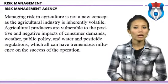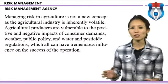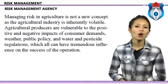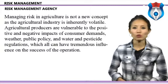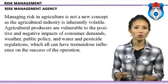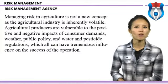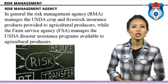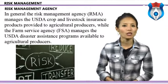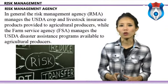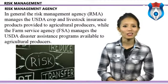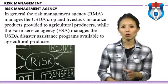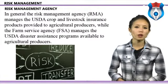Managing risk in agriculture is not a new concept, as the agricultural industry is inherently volatile. Agriculture producers are vulnerable to consumer demands, weather, public policy, and water and pesticide regulation, all of which can have tremendous influence on operational success. The risk management agency (RMA) manages USDA crop and livestock insurance products provided to agriculture producers, while the farm service agency (FSA) manages USDA disaster assistance programs available to agriculture producers.